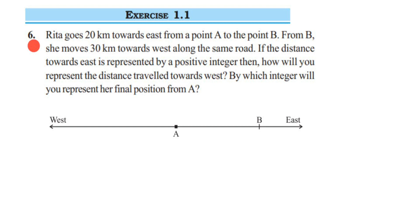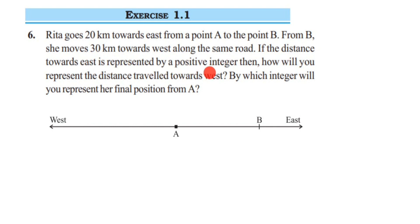Rita goes 20 km towards east from a point A to the point B. From B, she moves 30 km towards west along the same road. If the distance towards east is represented by a positive integer, then how will you represent the distance travelled towards west? By which integer will you represent her final position from A?